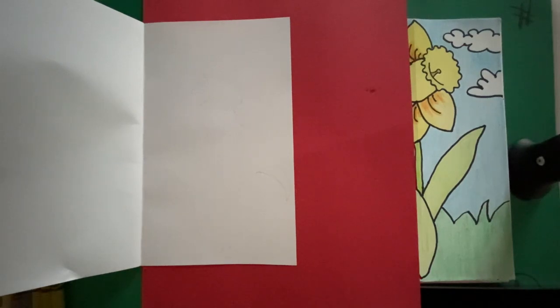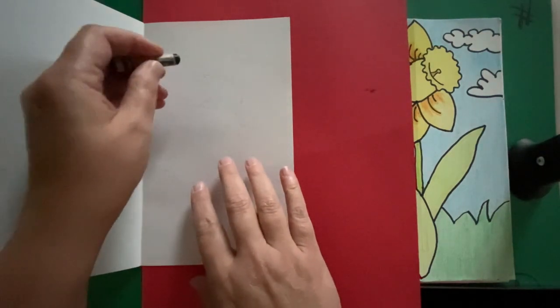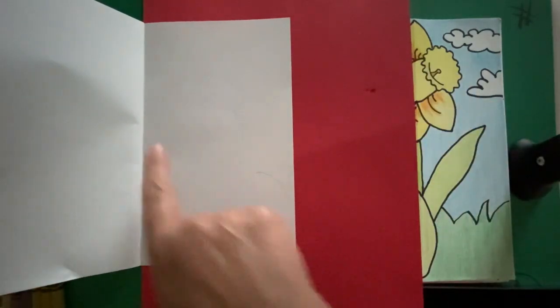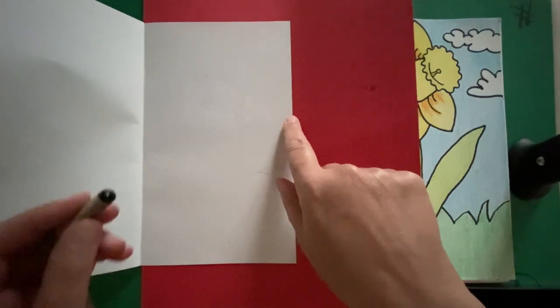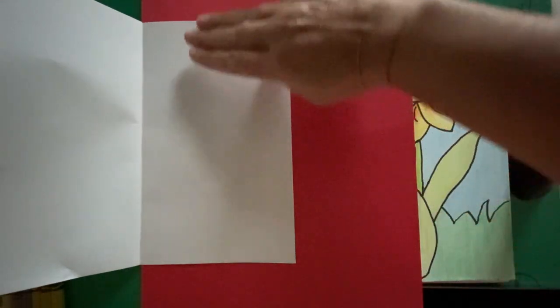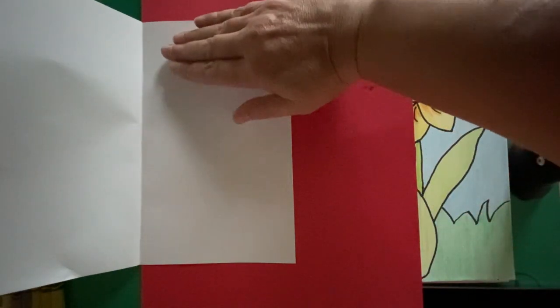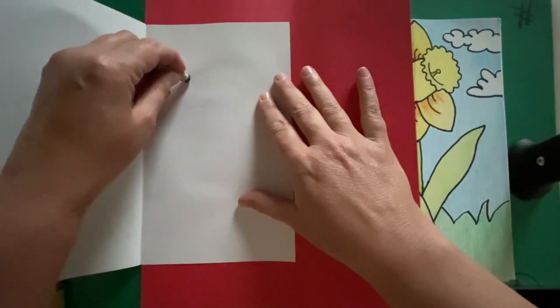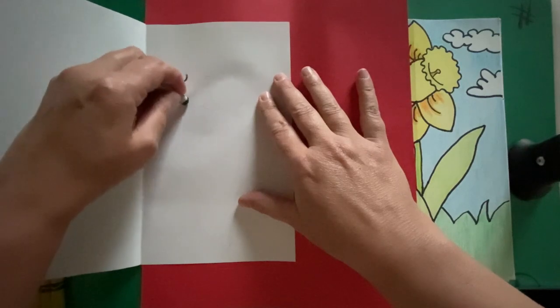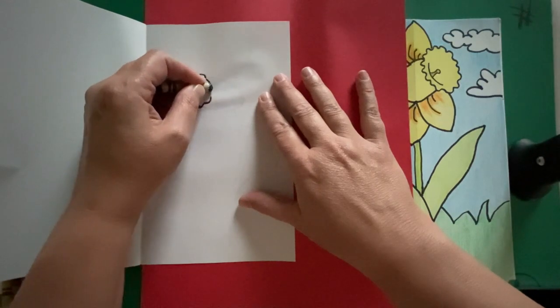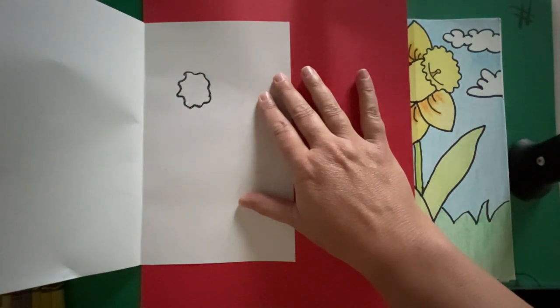All right, here we go. We're going to start with the center of the daffodil by drawing a wiggly circle. So here I am. Here's the top of my paper, the bottom of my paper, the left side of my paper, and the right side of my sketchbook paper. So I'm going to come in here about four fingers down, and I'm using a black crayon. We're just going to make a wiggly circle, just like that.